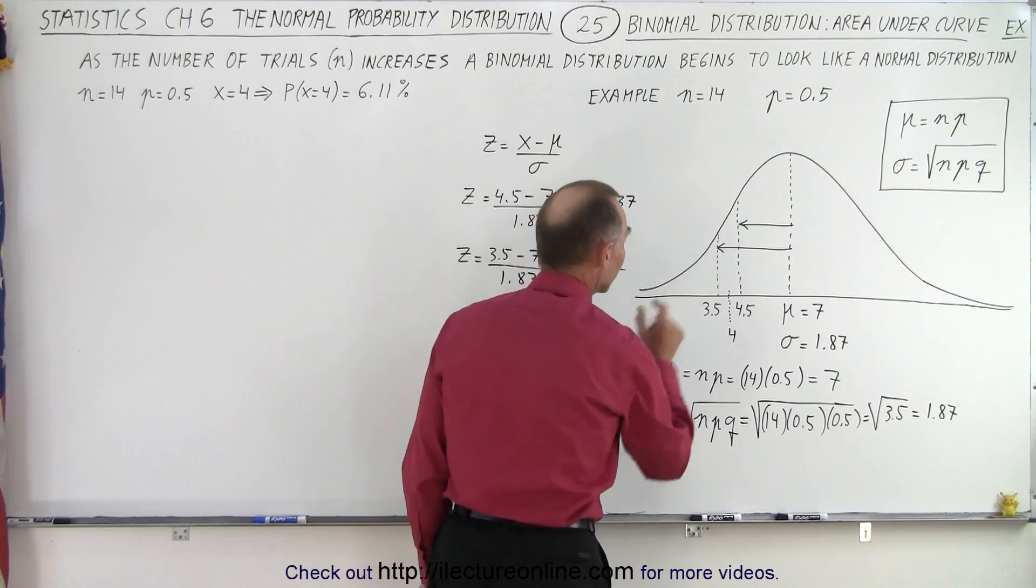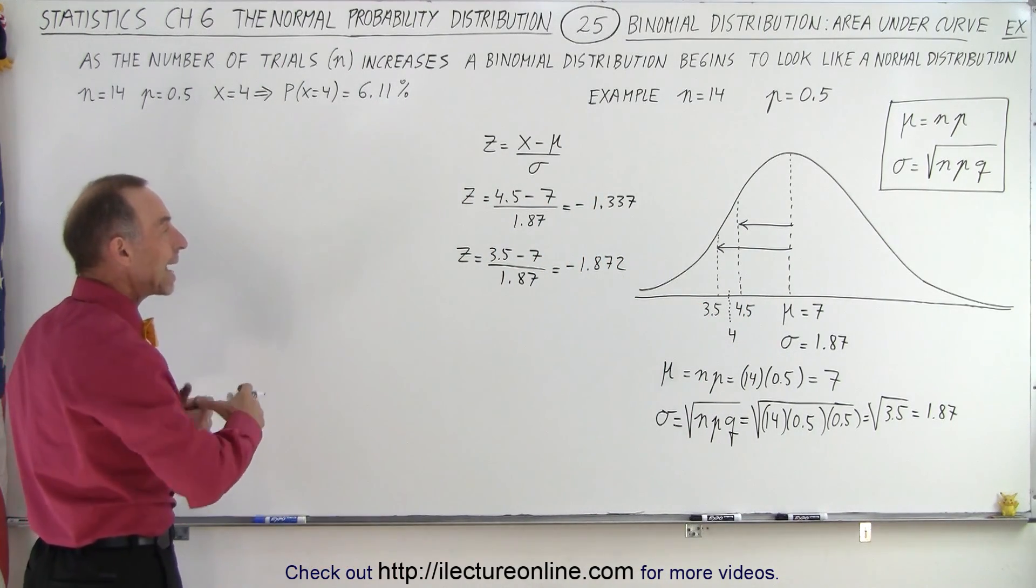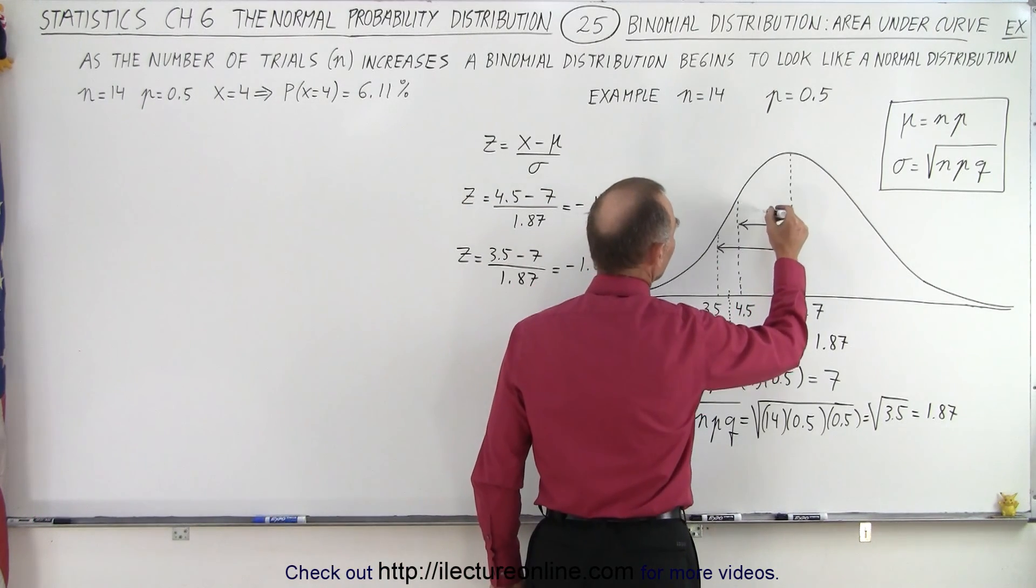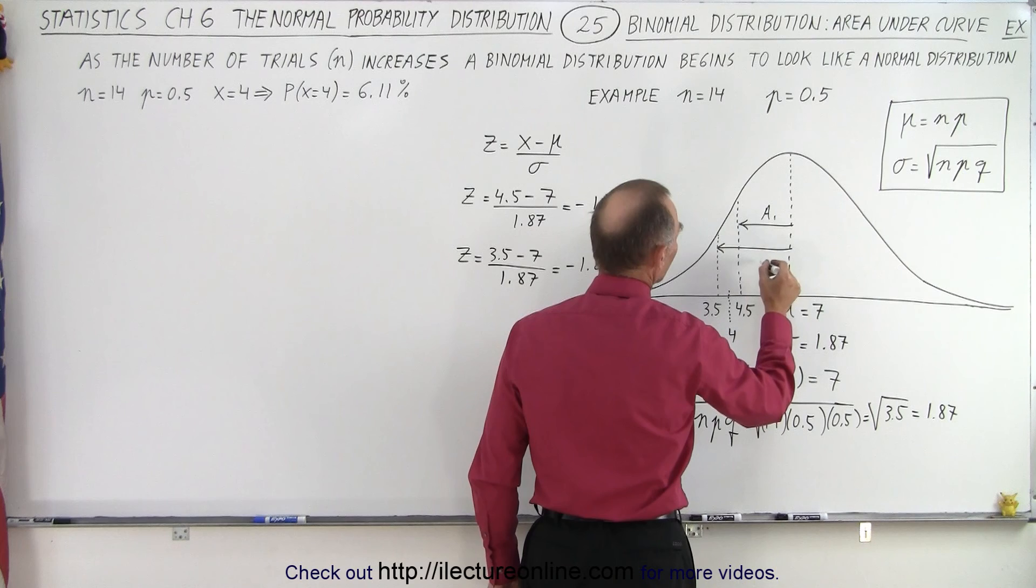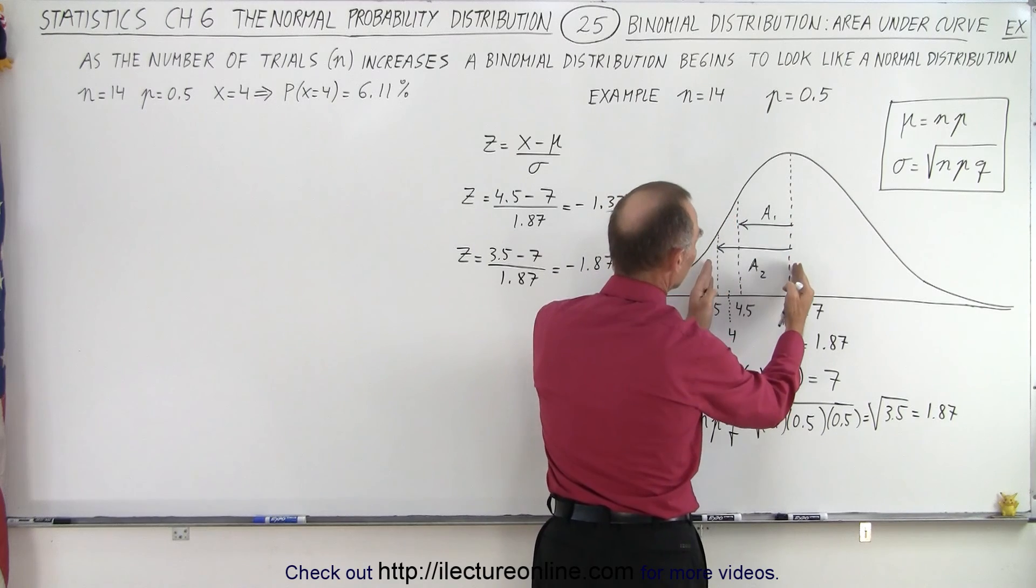So now we're going to use a table to find the corresponding areas. First of all we're going to find this area and let's call it area one, and then we're going to find this area which is area two, that would be the area between here and here and the area between those two.